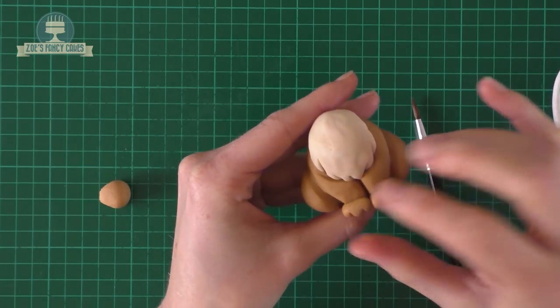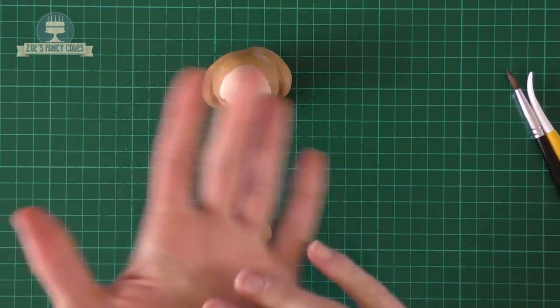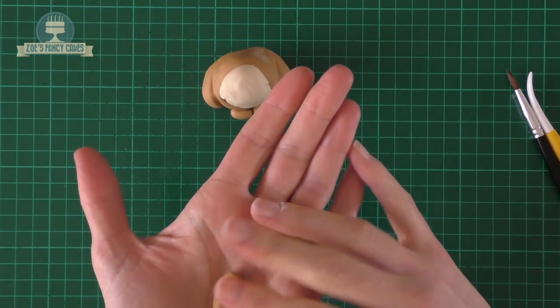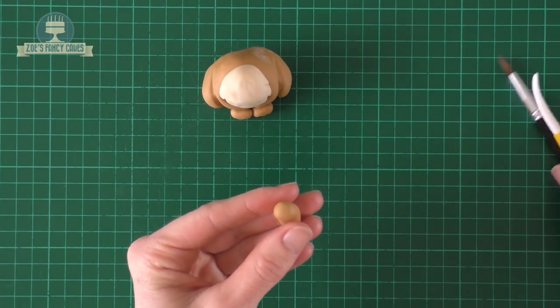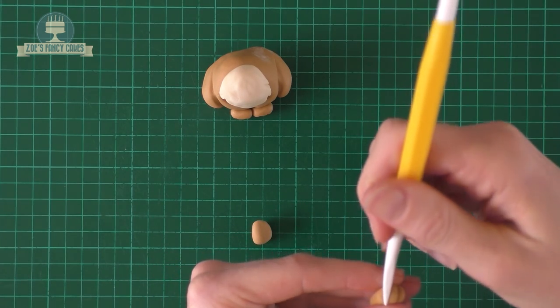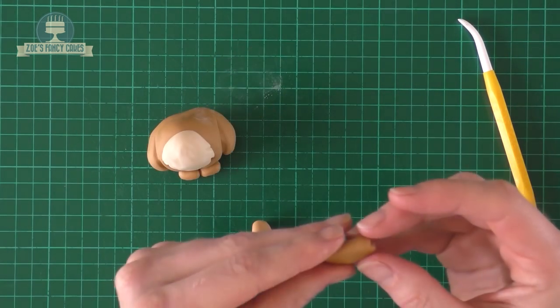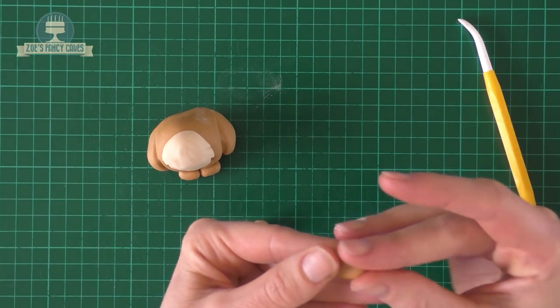And we're going to do some more feet now for the back legs. These ones are going to be a little bit bigger and we're going to roll them so they're a little bit longer as well and we'll put two lines in the top and leave the bottom bit plain. So I'm just stretching that out a little bit longer, just thinning it at the far end of the foot.